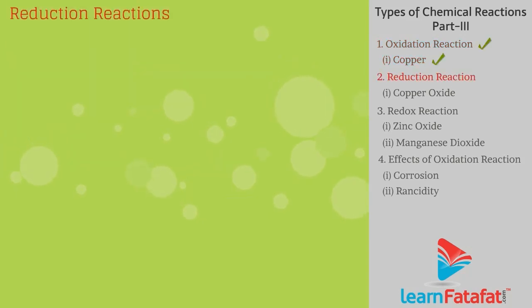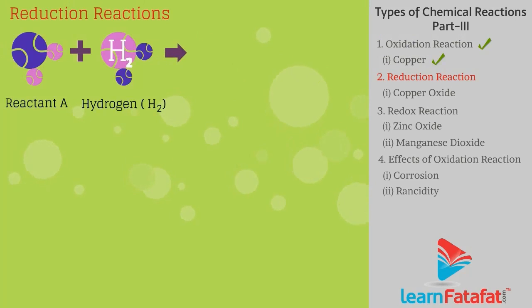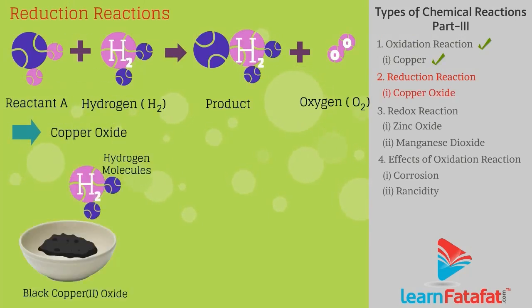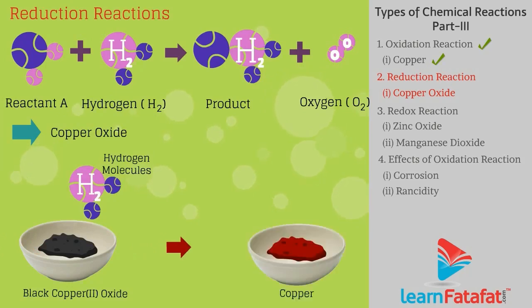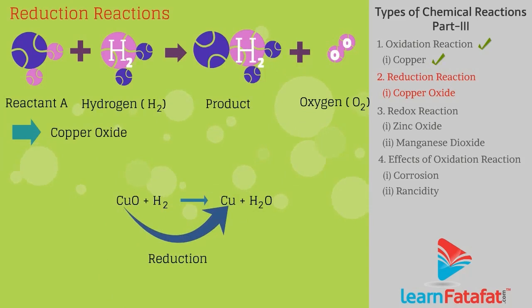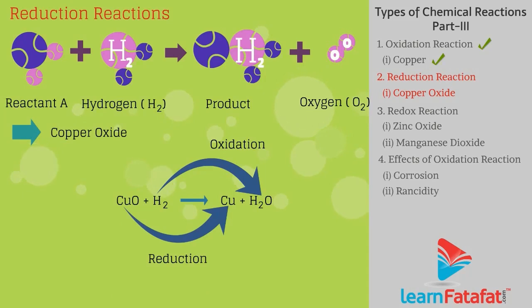Reduction reaction: Gain of hydrogen or loss of oxygen is a reduction reaction. Example — if hydrogen gas is passed over heated CuO, the black coating turns brown as the reverse reaction takes place and copper is obtained: CuO + H2 → Cu + H2O. Here, reduction is taking place in copper and oxidation is taking place in hydrogen.